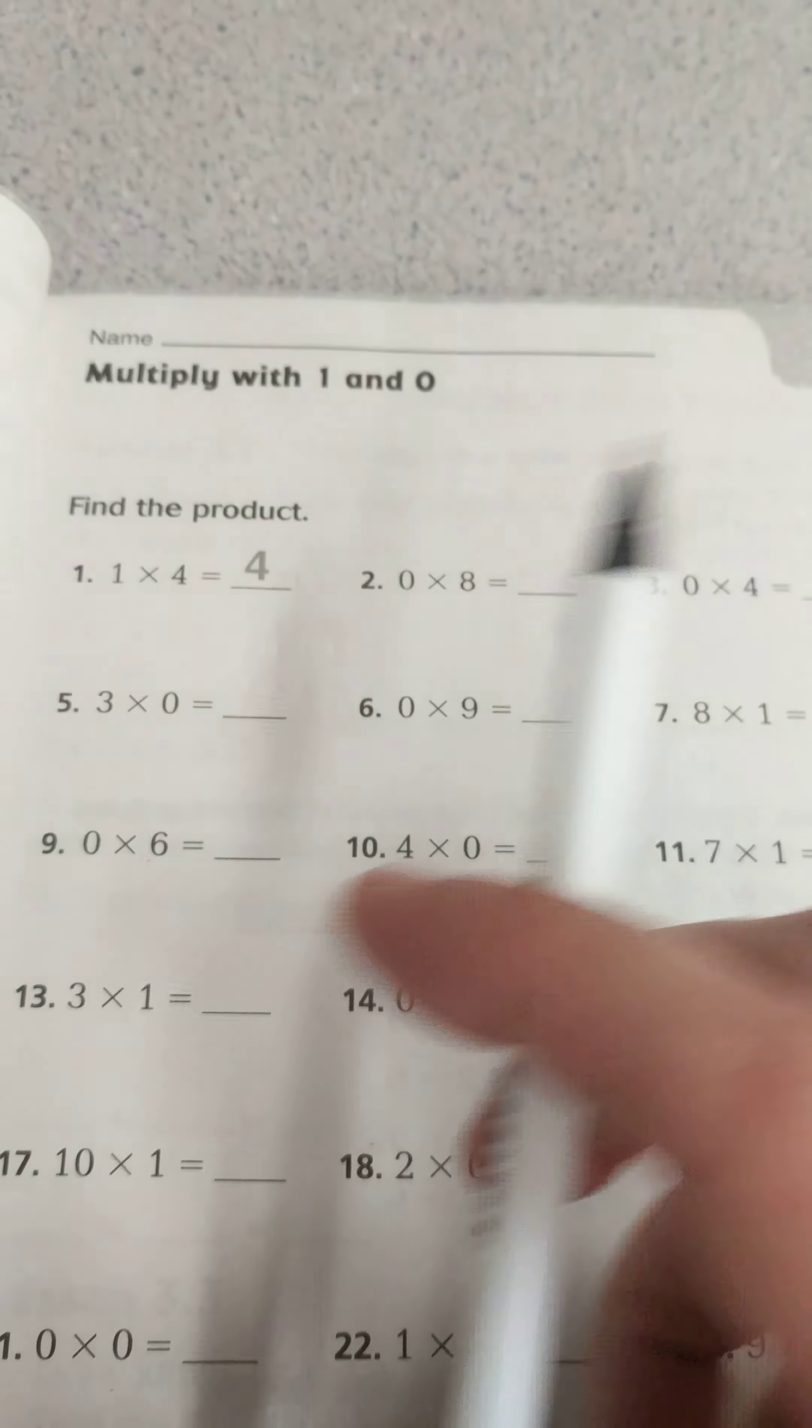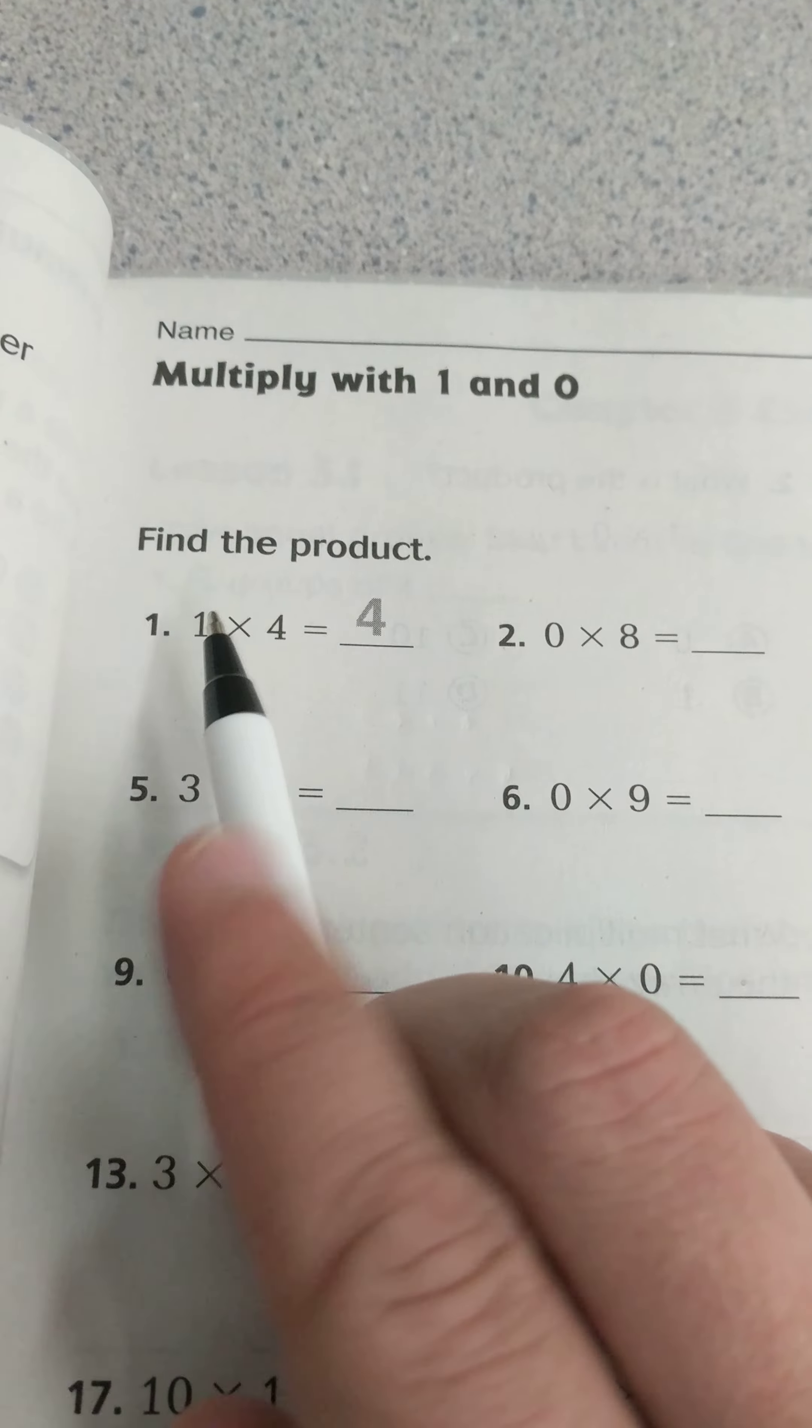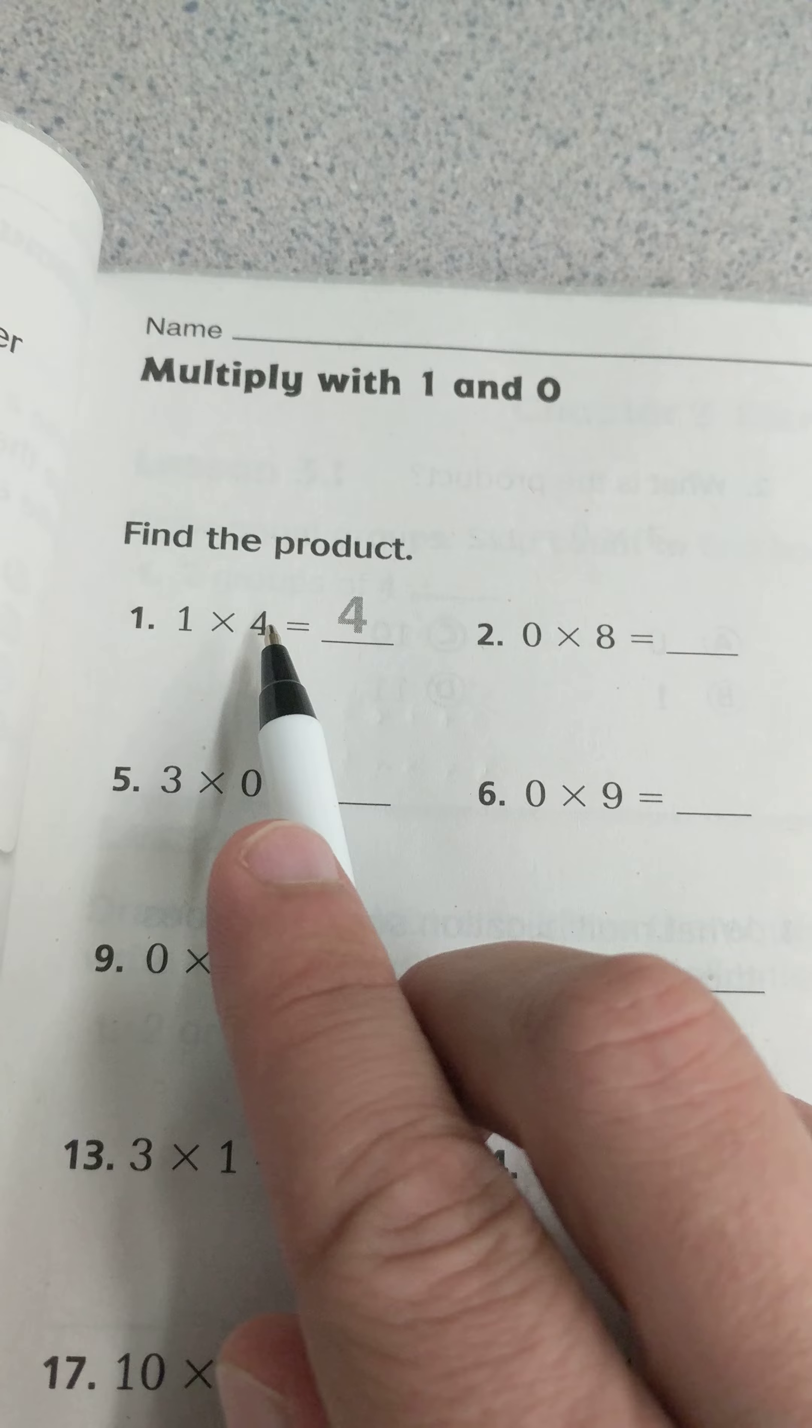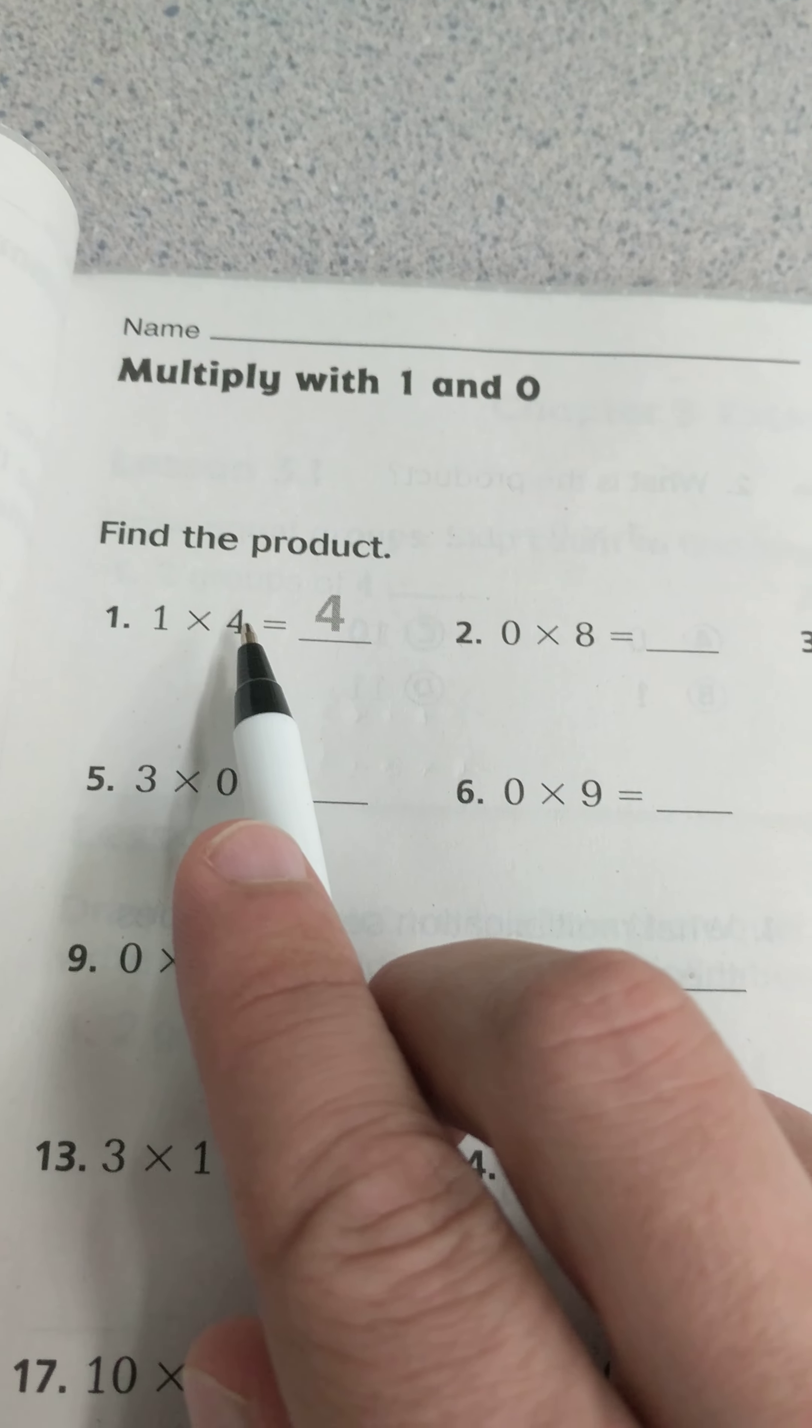I'll just do a few of these, but I'll spend most of the time explaining. Whenever we multiply anything times 1, it will equal the same as the number it's being multiplied by.